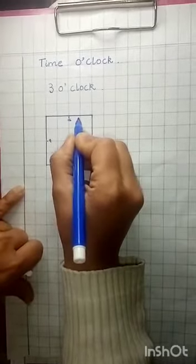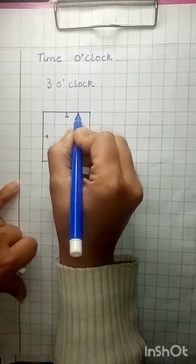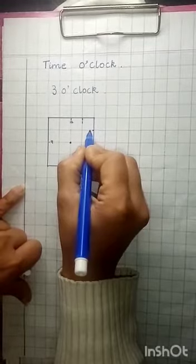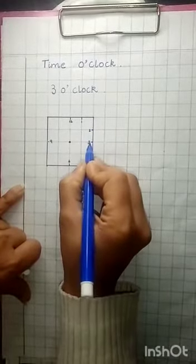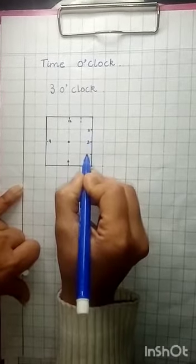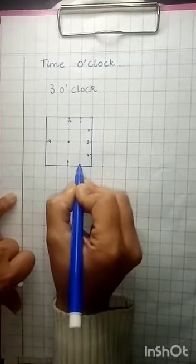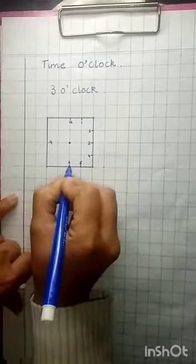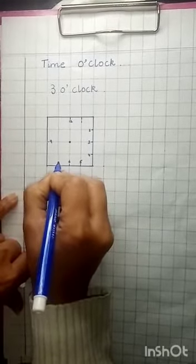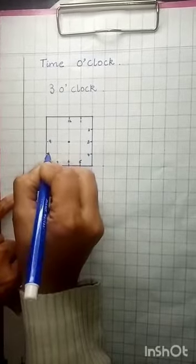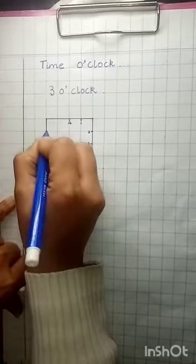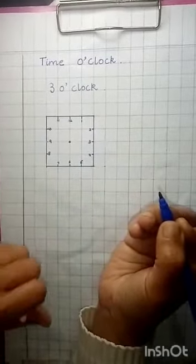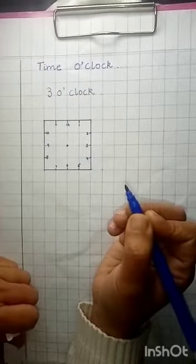And right here you will write 1. And here on this line we will write 2. After 3, here on this line you will write 4, then 5. And make small lines. After 6 we will write 7, then over here we will write 8, 9 and 10. And then here make small lines. Like this we will draw a clock.